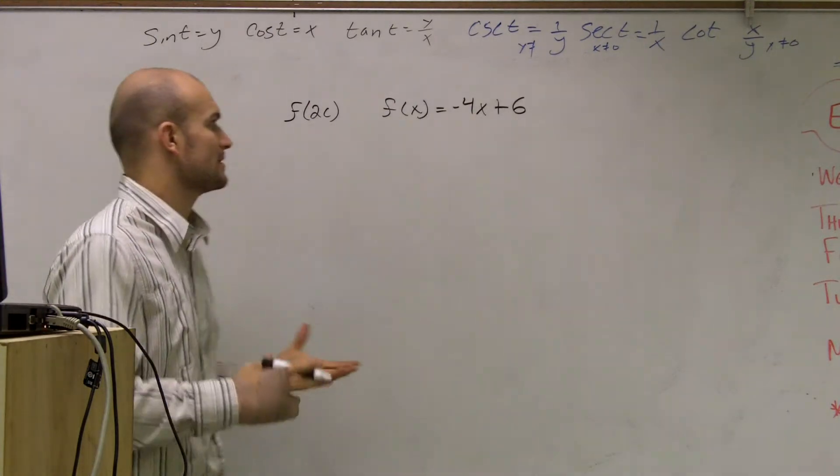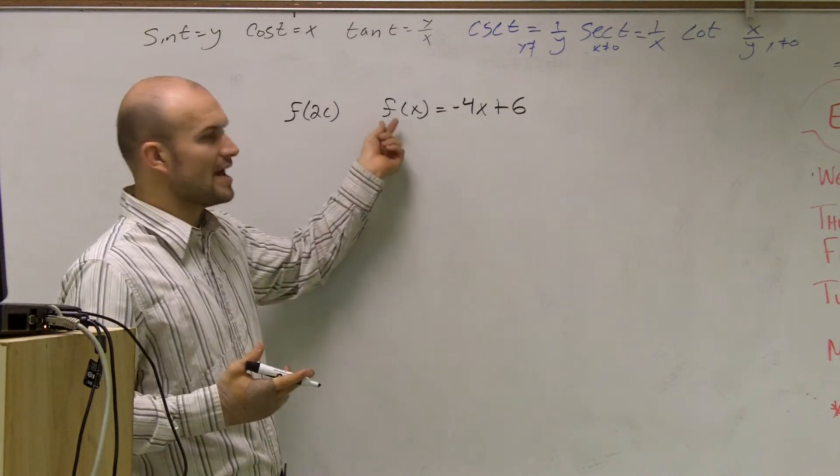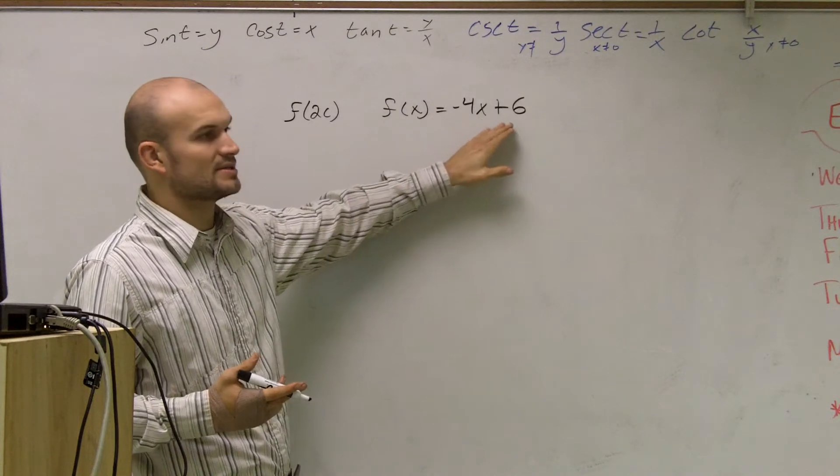So remember, when we're doing a problem like this, a function says f is just the name, so it says f, a function of x, is equal to negative 4x plus 6.